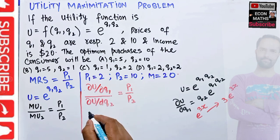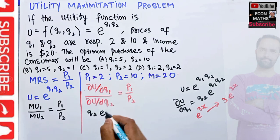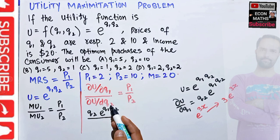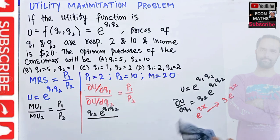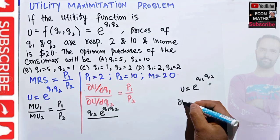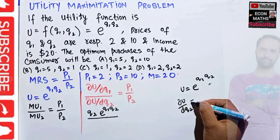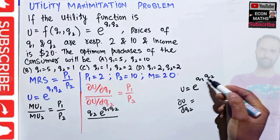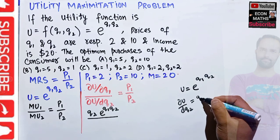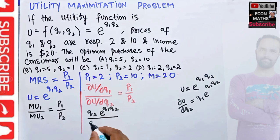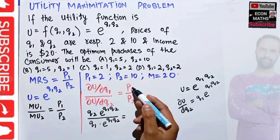So du/dq1 = q2 * e^(q1 * q2). Symmetrically, for du/dq2, we take the partial derivative of the utility function with respect to q2. The coefficient of q2 is q1, so du/dq2 = q1 * e^(q1 * q2).